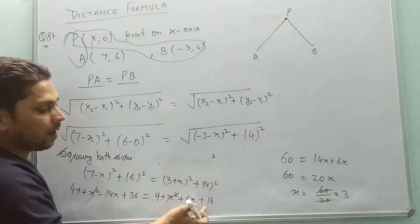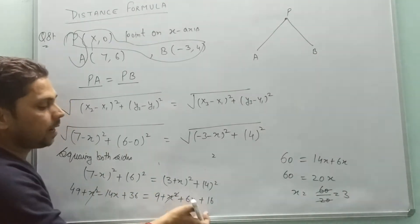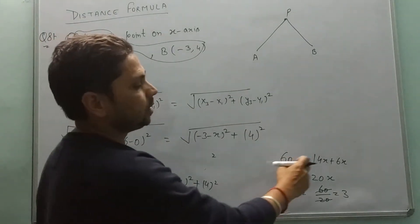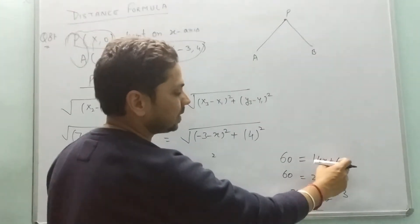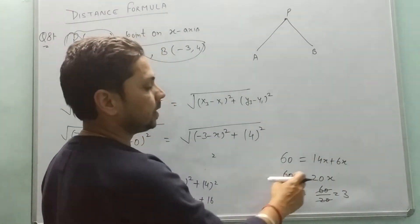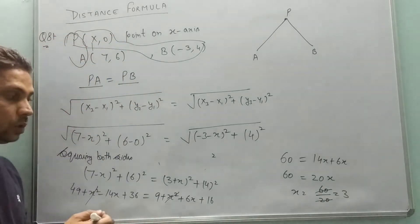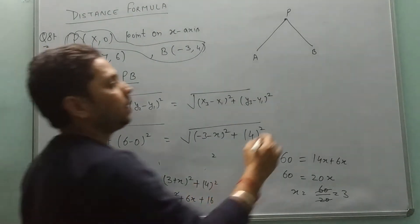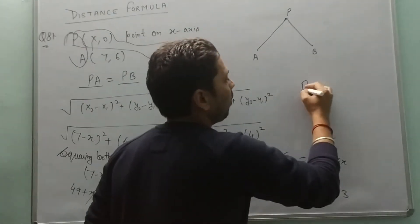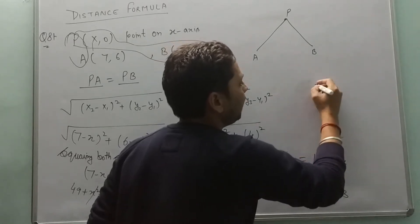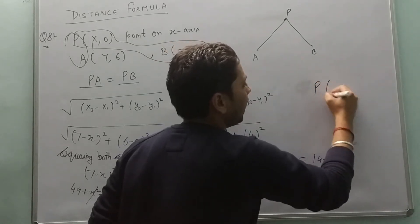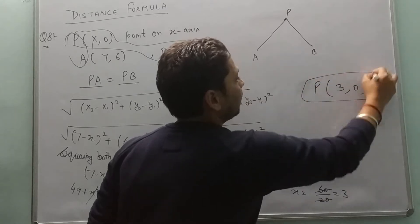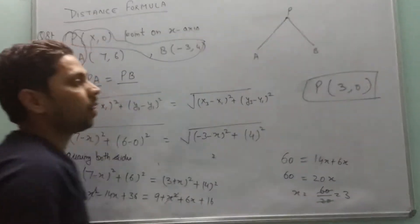Taking x values on one side and constants on the other, we have 60 equals 14x plus 6x, giving x equals 3. So the required point on the x-axis is (3, 0), which is the required answer.